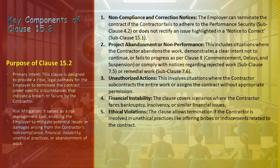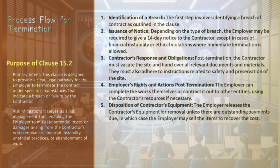Project Abandonment or Non-Performance: The employer can terminate the contract if the contractor abandons the project, showing a clear intent not to continue the work. Non-performance is also established if the contractor fails to progress as per Clause 8 (Commencement, Delays, and Suspension) or does not comply with notices regarding rejected work. It's also crucial to understand the process flow for termination of a contract, which ensures that both parties are aware of the steps to be taken in the event of contract termination.